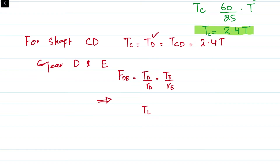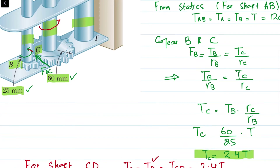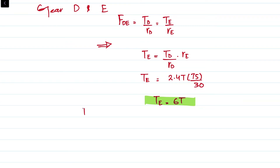For gears D and E in contact, T_D over R_D equals T_E over R_E. So T_E = T_D × (R_E / R_D). T_D is 2.4T, R_E is 75 mm, and R_D is 30 mm, giving T_E = 2.4T × (75/30) = 6T. So T_EF = T_E = T_F = 6T.